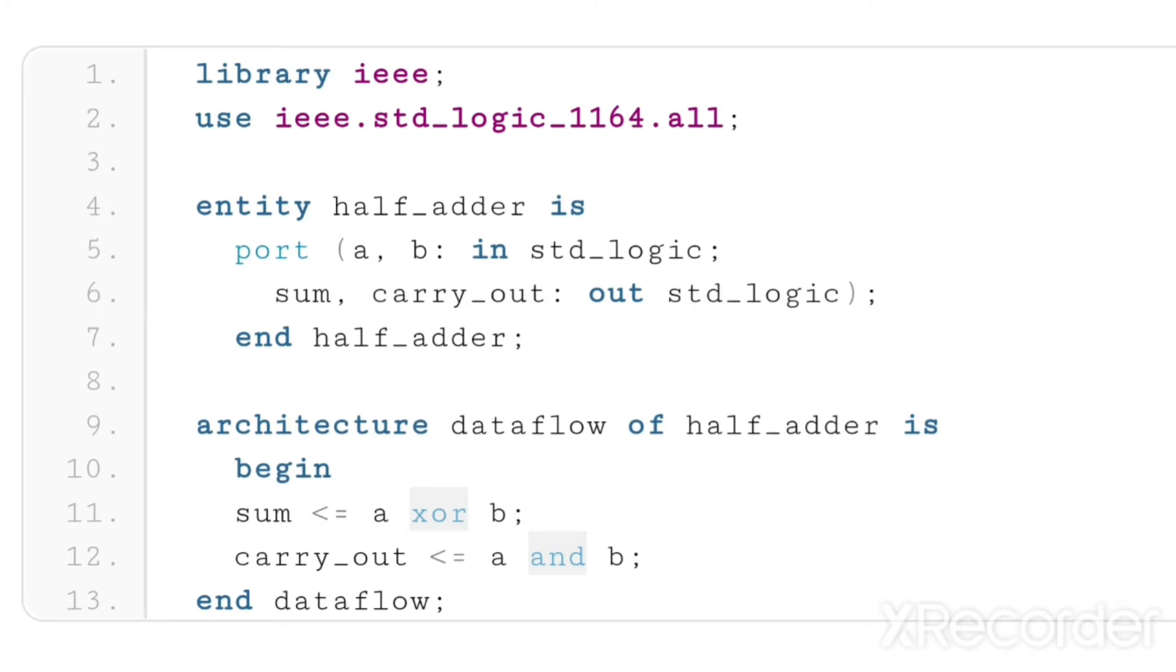In the code, I need to declare A and B as input ports and sum and carry as output ports. In the entity, I'm declaring these four ports of the half adder: A, B in std_logic; sum, carry_out out std_logic. These four are my input and output ports.